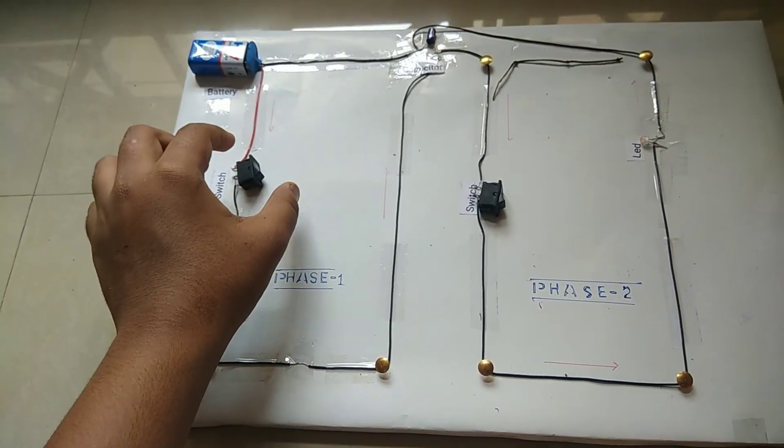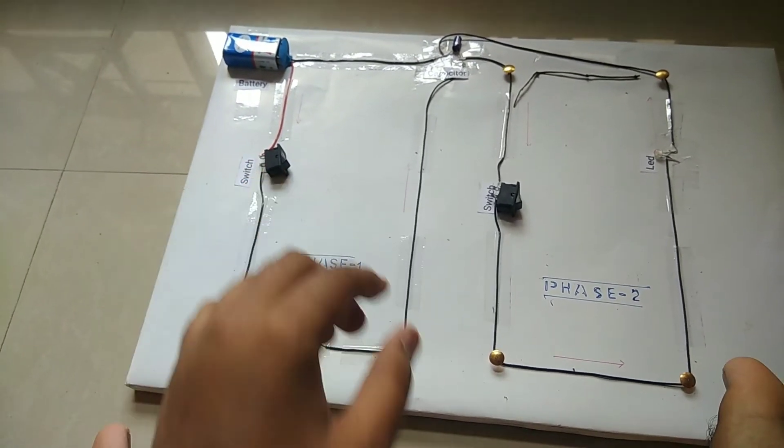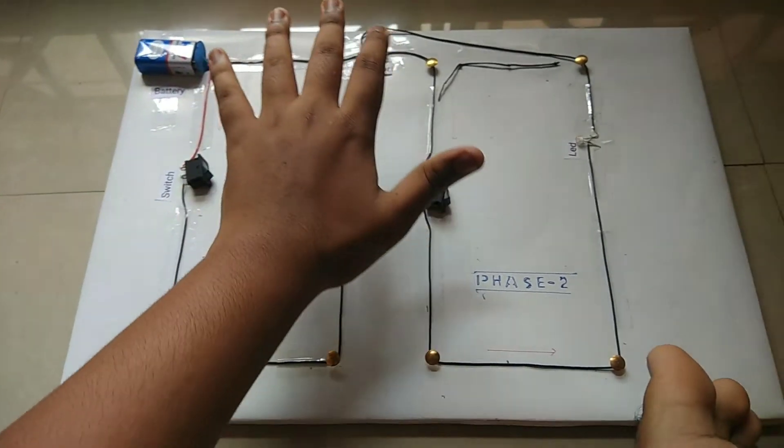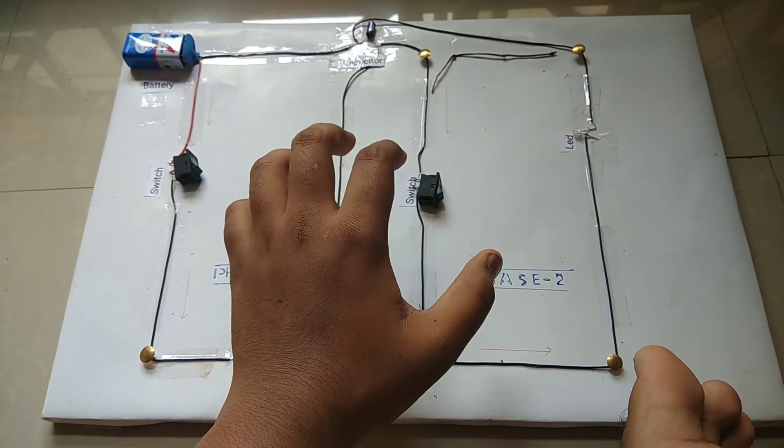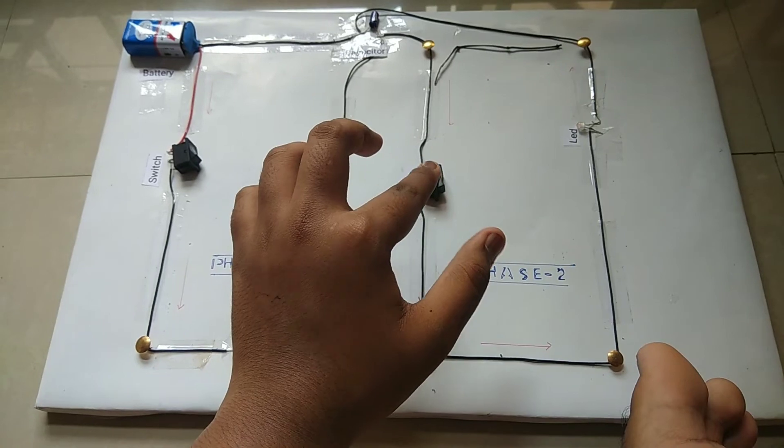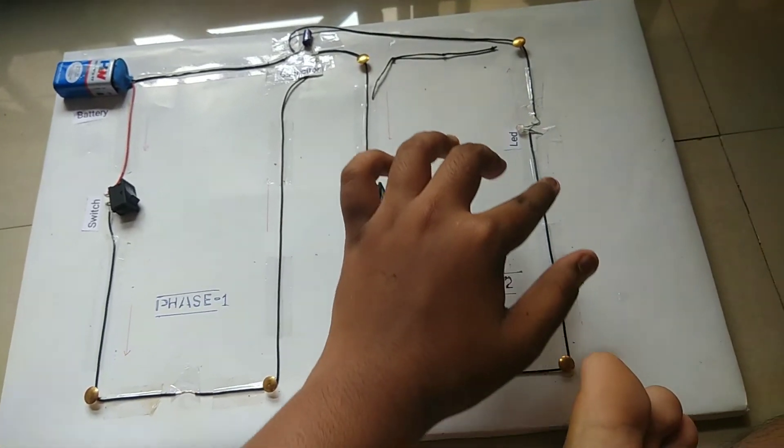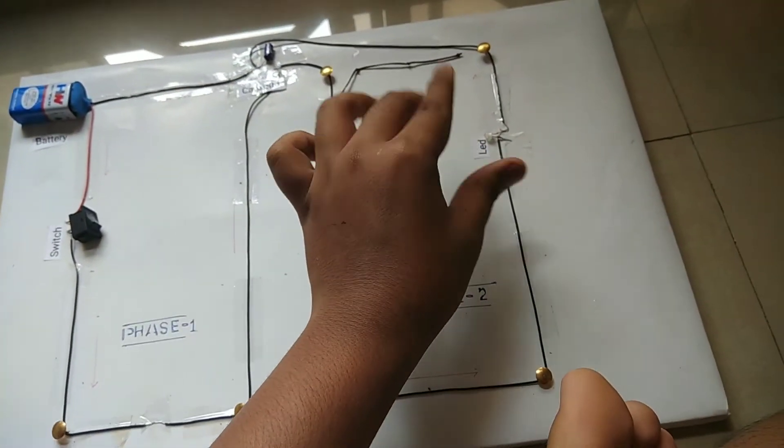The capacitor charged very fast. As you saw, I switched on the switch and switched off. The capacitor is charged now. As soon as I switch it on, all charge will flow through this circuit and this LED will glow.